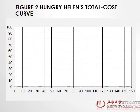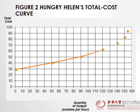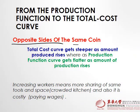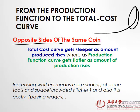Our graph would look like this. When you connect the dots, you can see that as production rises there are points after which your total cost rises sharply. The total cost curve gets steeper as the amount of production rises — 'steeper' means like a steeple.